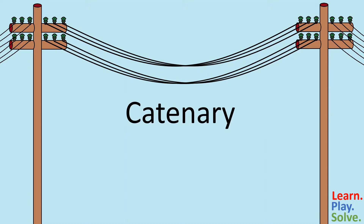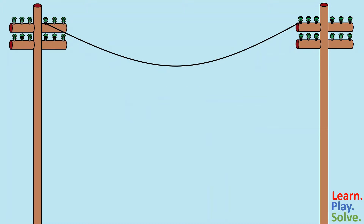Probably the most common example of a catenary that you see every day is a power line. Let's see if we can find the mathematical formula for a catenary using this power line.